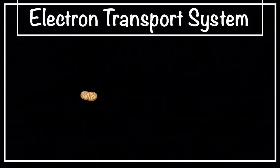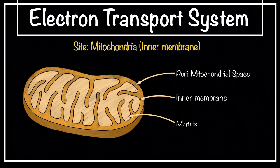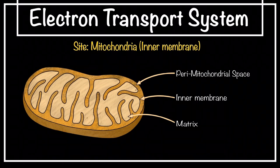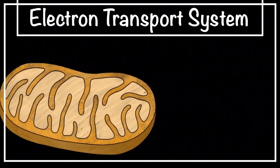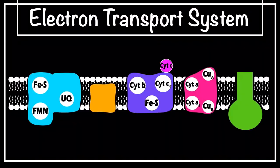Let's first see some important points regarding the electron transport system, and later we'll see the mechanism. The site of the electron transport system is the inner mitochondrial membrane. As we know, mitochondria is a double membrane-bound structure. The electron transport system is made up of a series of enzyme complexes present on the inner mitochondrial membrane, and there are five different types of enzyme complexes involved.